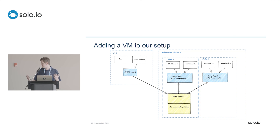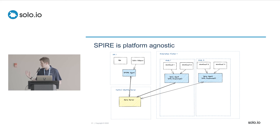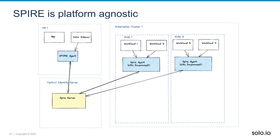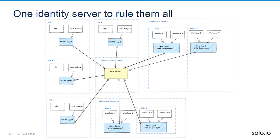All of this SPIRE stuff is platform-agnostic. There's no reason the SPIRE server needs to run in Kubernetes — you could put it somewhere else, like a central identity server, on-premises, or a legacy system in charge of identity. You can point to it from pretty much anything with a compatible client. So you can grow your architecture — add more VMs, more clusters, more cloud providers. At a certain scale you'll need to tweak the deployment a bit, but that's a whole other talk.